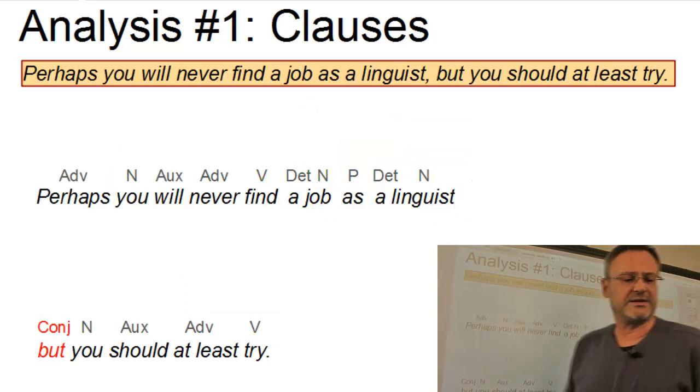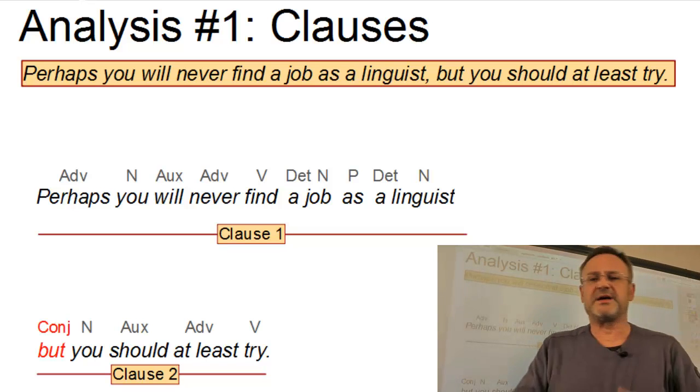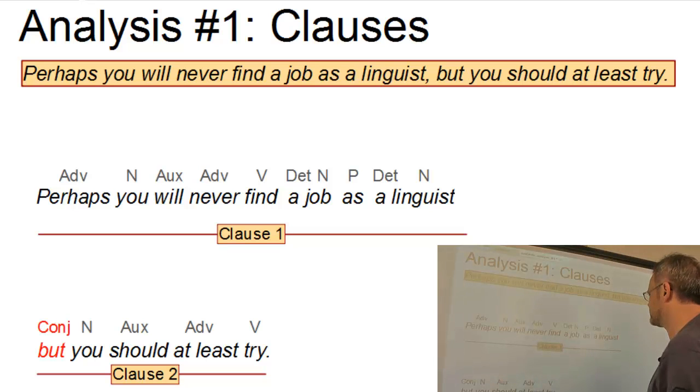Now, the clausal analysis is really simple. We have two independent clauses in a coordinate relationship, and they are linked by the conjunction but. Both clauses can occur independently. Perhaps you will never find a job as a linguist, and you should at least try.